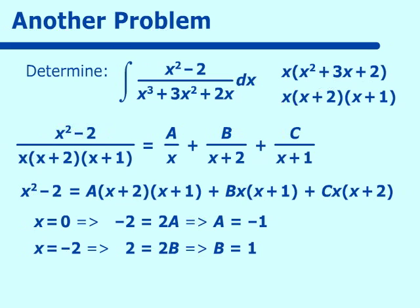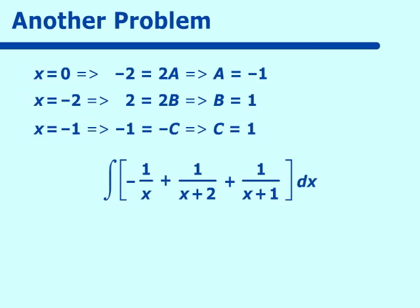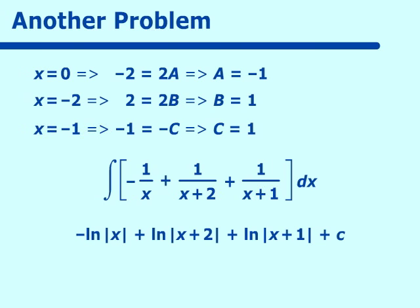Setting x equal to negative 1, a and b cancel, leaving negative 1 equal to negative c, so c equals 1. The integral becomes the integral of negative 1 over x plus 1 over (x plus 2) plus 1 over (x plus 1), dx. This evaluates to negative ln|x| plus ln|x plus 2| plus ln|x plus 1|, plus a constant.